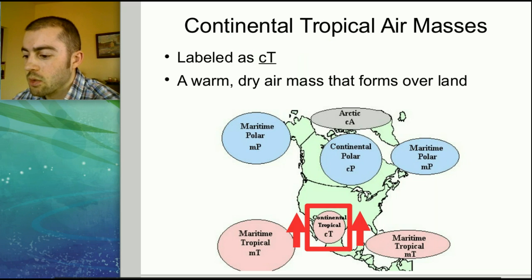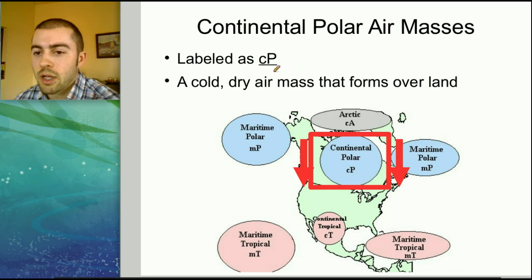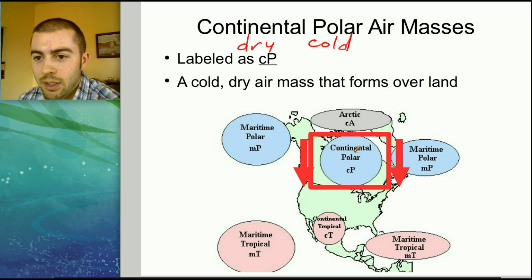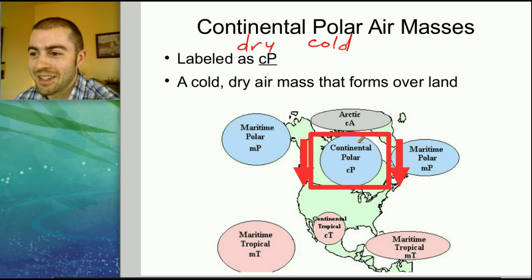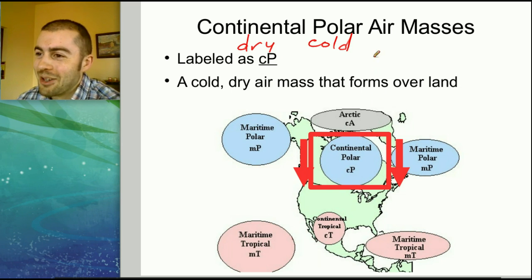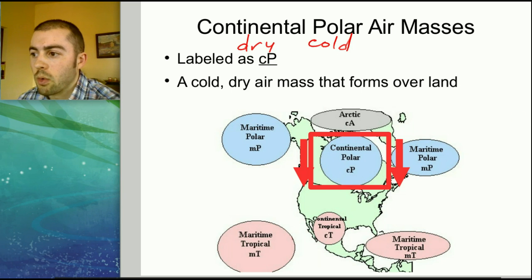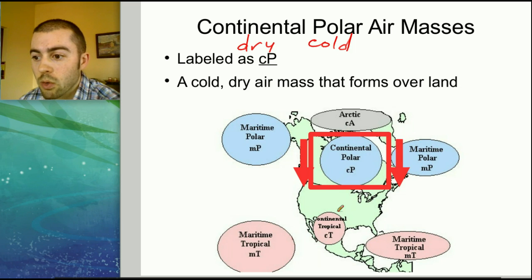Our last type is a continental polar air mass, abbreviated lowercase c, uppercase P. This gives us a dry and cold air mass. Because it forms over land, these develop up over Canada — northern Canada, the Yukon territories — and bring cold, frigid weather when they come down from the north. So if you know what type of air mass is coming, you can predict the weather: air from up north means colder air, and air from the south means warmer air.